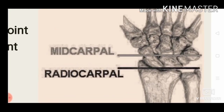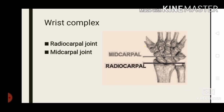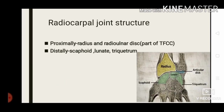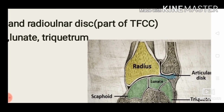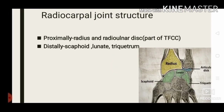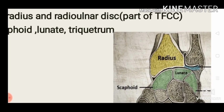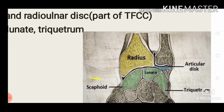The wrist consists of two compound joints: the radiocarpal joint and the midcarpal joint. For the radiocarpal joint, the proximal articular surface is formed by the radius and the radio-ulnar disc. You can see that the articular disc is placed between the radius and ulna — this disc is part of the triangular fibrocartilage complex. The distal articular surface is formed by the scaphoid, lunate, and triquetrum.